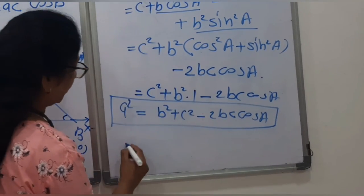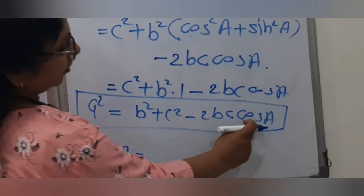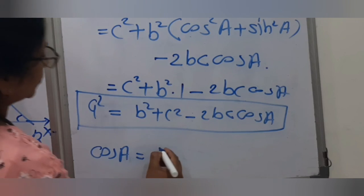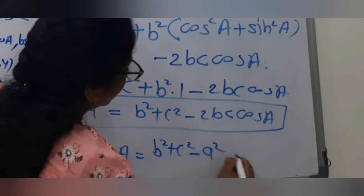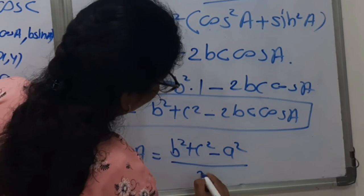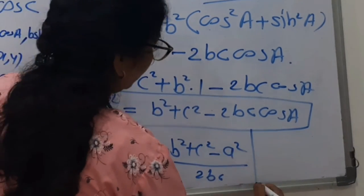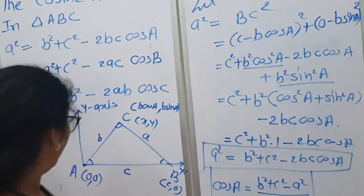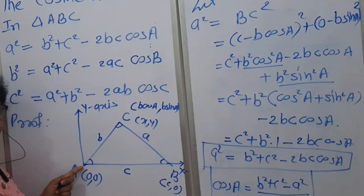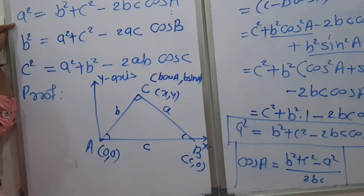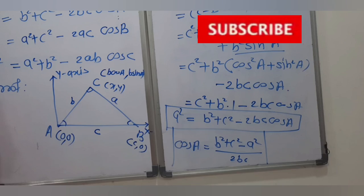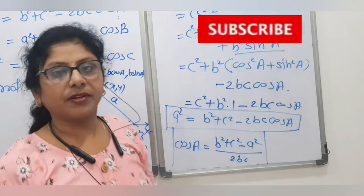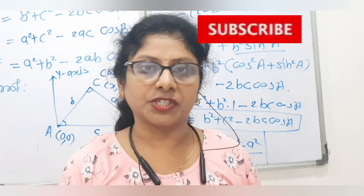This can also be written as cos A equals (B squared plus C squared minus A squared) divided by twice BC. This is another way to express the cosine rule. Here we have considered A as origin for the first statement; if you consider B as origin you get the second, and if you consider C as origin you get the third statement. In the next video, we will see the projection rule. Thank you.